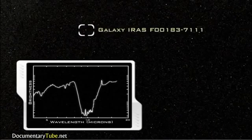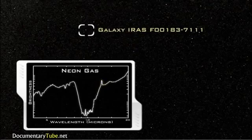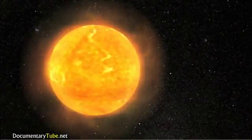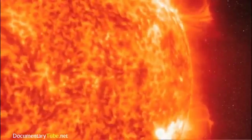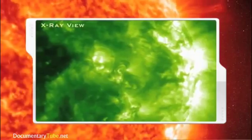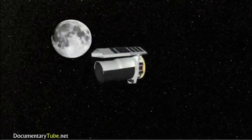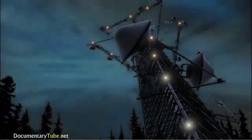NASA's Spitzer Space Telescope observed the presence of water and organic molecules in a galaxy 3.2 billion light years away. Viewing our sun in multiple wavelengths with the SOHO satellite allows scientists to study and understand sunspots associated with solar flares and eruptions harmful to satellites, astronauts, and communications here on Earth.